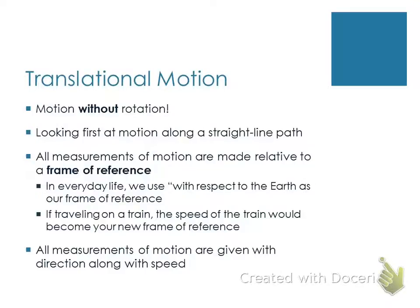Measurements of motion — things like how far you've walked, your displacement, how fast you're traveling — have to be given with a direction along with the speed or velocity. You've got to give a measurement that includes direction. Directions can be simple: forward, backward, positive, negative, or east, west, north, south. There are lots of different ways to indicate direction, but it must be included.